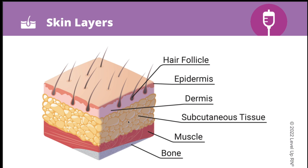Under the dermis, we have the hypodermis, or subcutaneous tissue. This layer contains adipose, or fat tissue. Then under the hypodermis, we have muscle and tendon, and under that, we have bone.